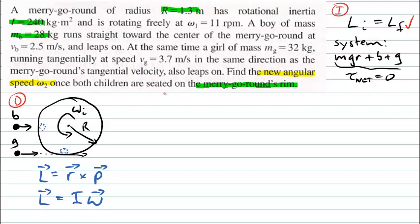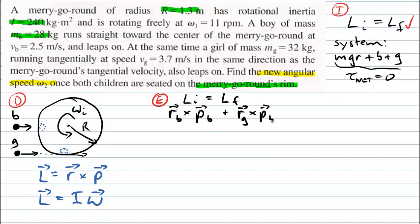Moving on to the evaluation step, we write that the initial angular momentum equals the final angular momentum, because the system has no net external torque. The initial angular momentum includes the boy running towards the center — his angular momentum is r cross p — plus the angular momentum of the girl, which is her position crossed with her momentum, plus the rotational inertia of the merry-go-round multiplied by its initial angular velocity.